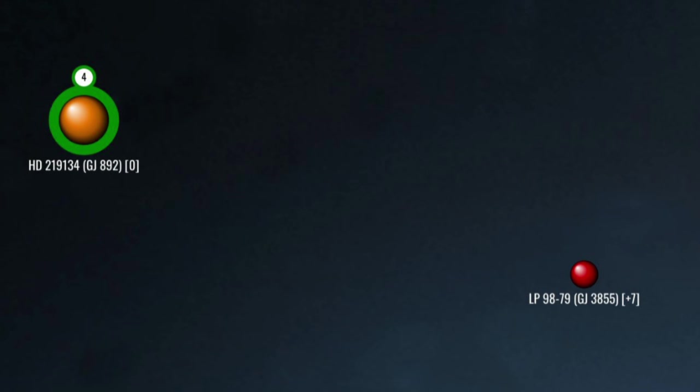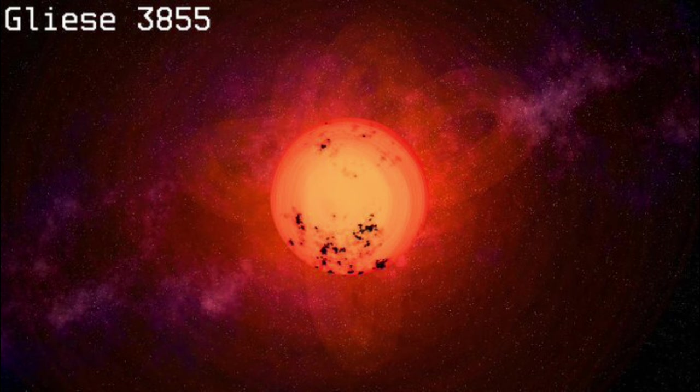Coreward and 7 parsecs south of 892, we arrive at the red dwarf, Gliese 3855, an eruptive variable star about a fifth the mass of the sun.